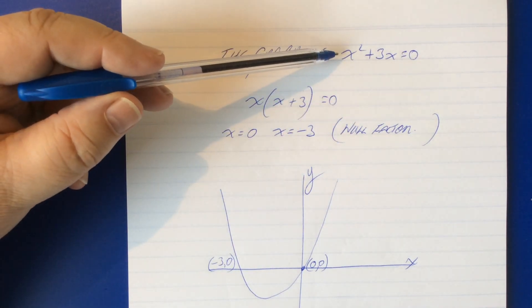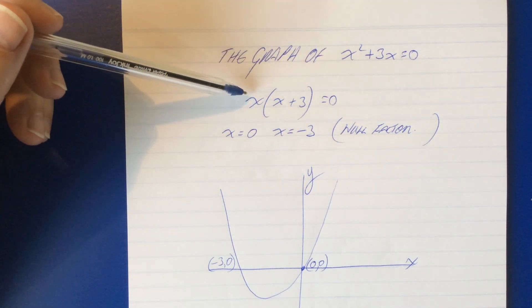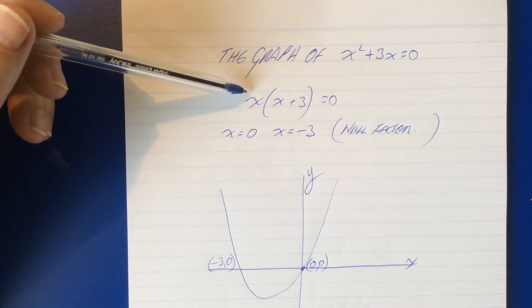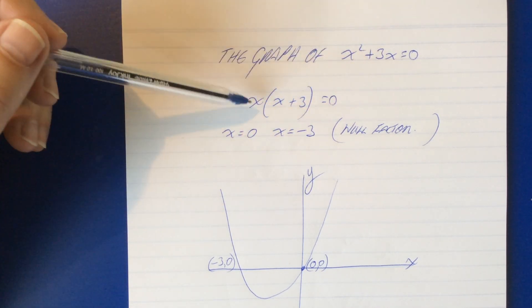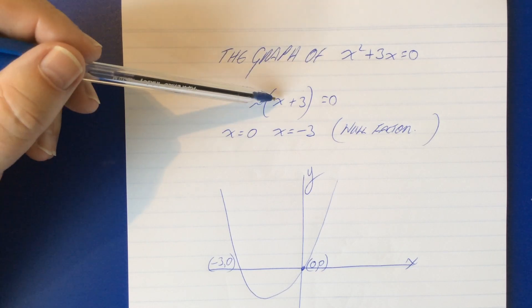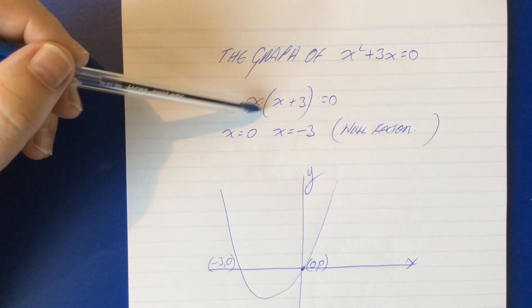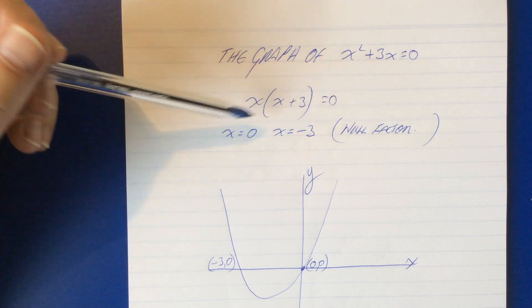This is not a quadratic trinomial. We nevertheless factorize it as best we can. These are fairly easy to factorize. We take out a common factor which is x and we're left with x into x plus 3 equaling zero.